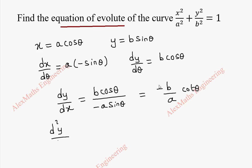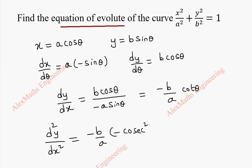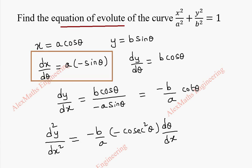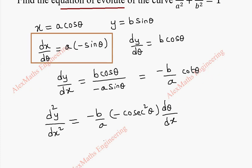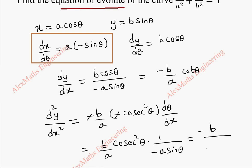Using this we can find the second differentiation d²y/dx², which is minus b by a — a constant — and cot differentiation is minus cosec² θ. The differentiation of θ with respect to x is dθ/dx, and dθ/dx we can take as the reciprocal of dx/dθ. So this becomes: b by a times cosec² θ times 1 by minus a sin θ, which can be rewritten as minus b by a², and totally it will become sin³ θ in the denominator.